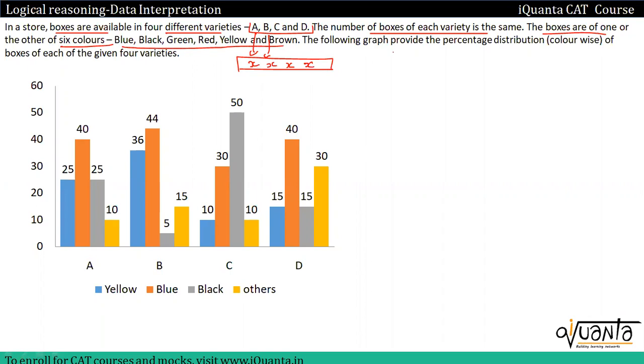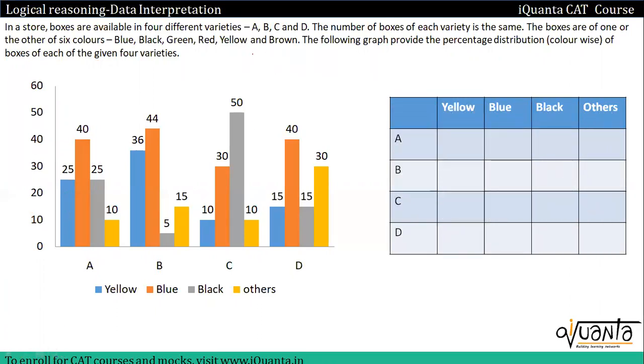The boxes are of one or the other of the six colors: blue, black, green, red, yellow and brown. The following graph provides the percentage distribution of boxes of each of the given varieties. For example, if I see variety A, the total of all four values is 100%. Same for variety B - the total of these four is 100%. If I say variety A's total number of boxes, 25% will be yellow color, 40% blue and so on. Similarly, we can say for the remaining varieties also.